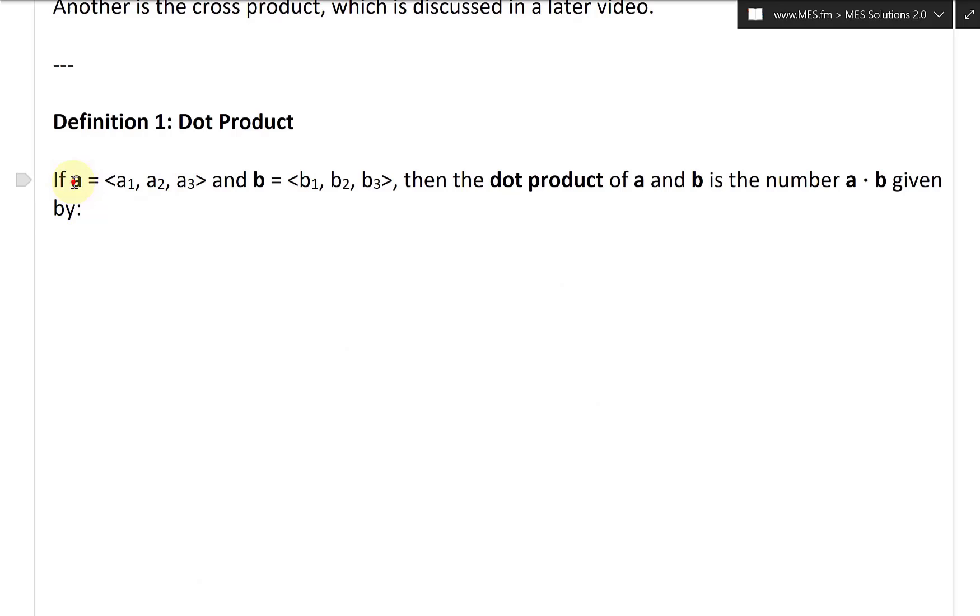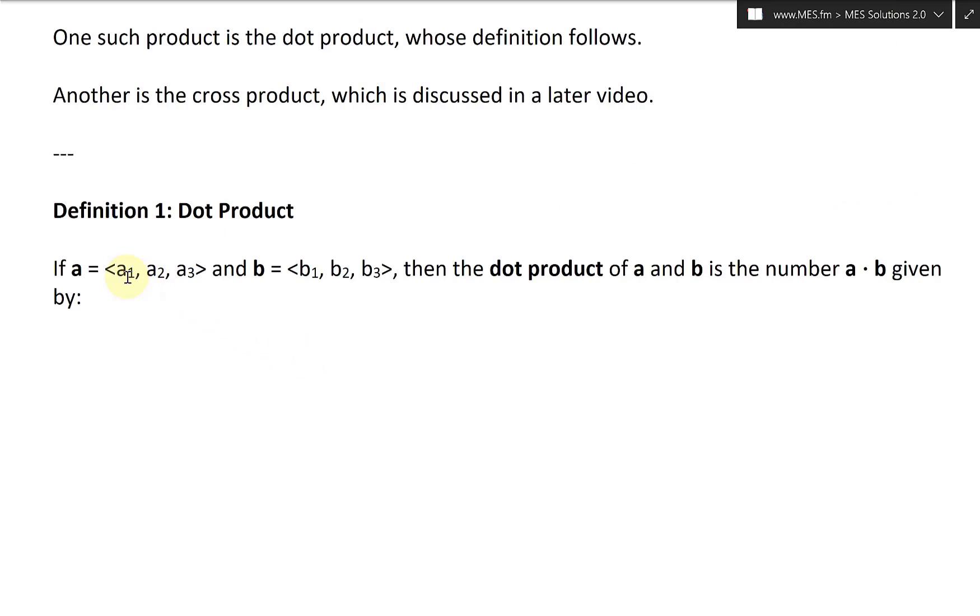So if the vector a, and remember we bold them if it's a vector, has components a1, a2, a3 in triangle brackets for indicating it's a vector. And this b vector has components b1, b2, b3. Then the dot product of a and b vectors is the number a dot b. Given by, and we'll write this over here, a dot b. And remember the notation.